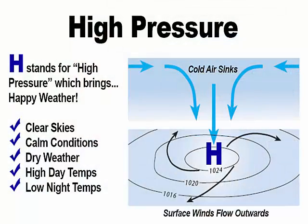A rise in air pressure means we can expect good weather — we call this high pressure. High pressure is usually represented by a blue H on weather maps. In the atmosphere, dry air sinks, then diverges or separates to create nice weather.